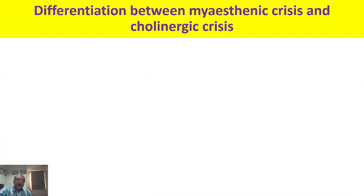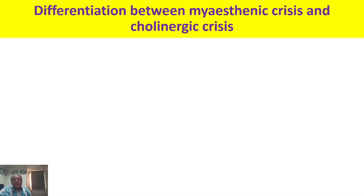The second question is how to differentiate myasthenic crisis from cholinergic crisis, which can occur during treatment of a myasthenic patient. Myasthenic crisis occurs when the disease progresses to the point that respiratory muscles are also involved. Cholinergic crisis occurs during treatment when excessive reversible cholinesterase inhibitors are given, leading to more acetylcholine being released.